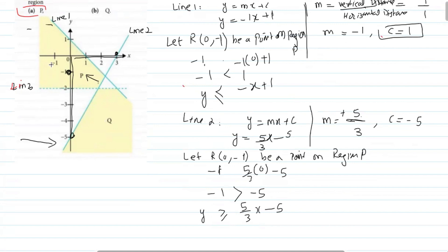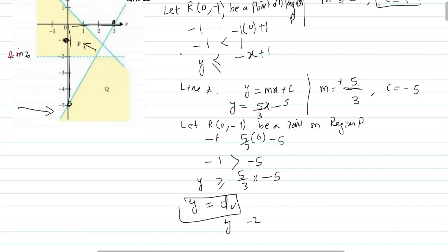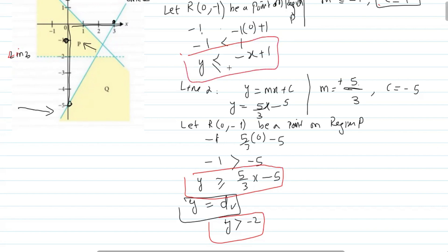The third line is a dotted horizontal line. The general equation of a horizontal line is y equals d, where d is the y-intercept. Here the horizontal line is at y equals minus 2. Region P is above this dotted line, so all y values in region P are greater than minus 2. Since the line is dotted, we do not include equal to, so the third inequality is y greater than minus 2. This completes the inequalities for region P.